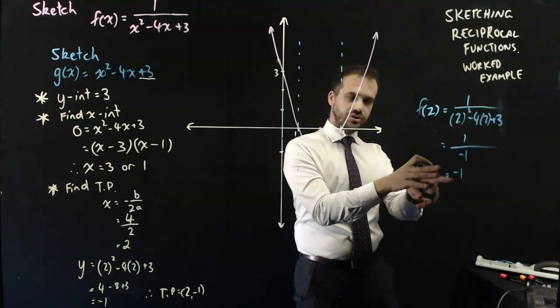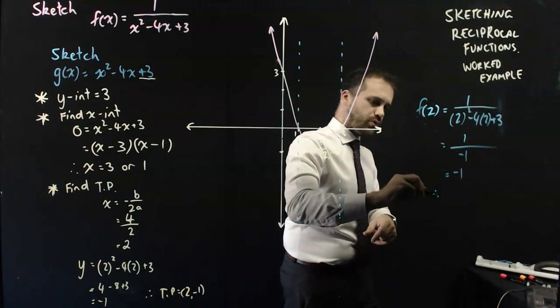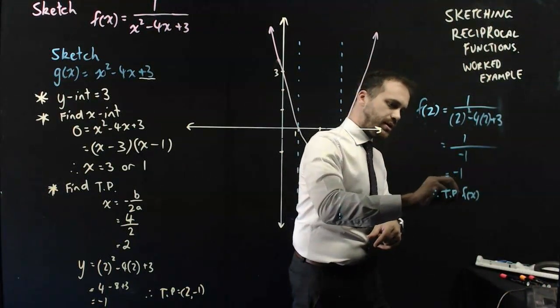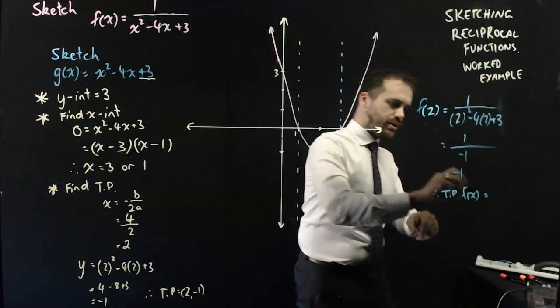All right. That's really interesting. So that means, therefore, the turning point of f(x) is equal to 2, negative 1.